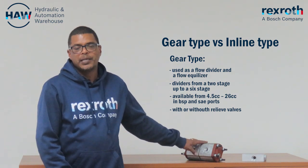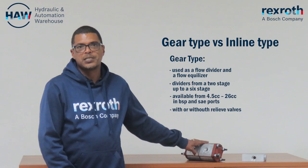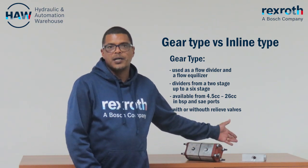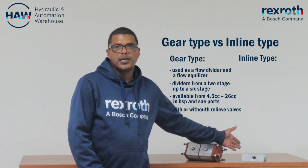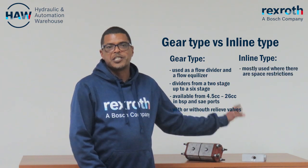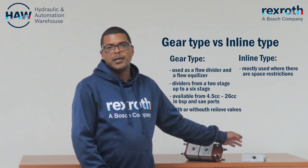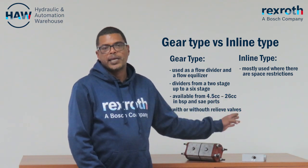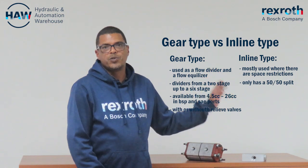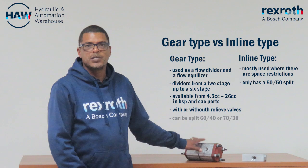It is bulky, so it is actually used where there is space. Whereas its counterpart, the inline flow divider, can only be used where there are space restrictions. Your inline type is not accurate because it can only be 50-50 divided, whereas your gear type can be divided in different ratios.